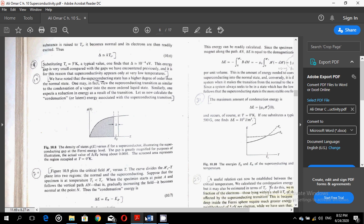Now to estimate the value of delta, let us substitute Tc is equal to 5 degrees Kelvin, which is a typical value. One finds that this superconducting band gap is of the order of 10 to the power minus 4 electron volts. This energy gap is very small compared with the gaps we have encountered previously and it is for this reason that superconductivity appears only at very low temperatures.